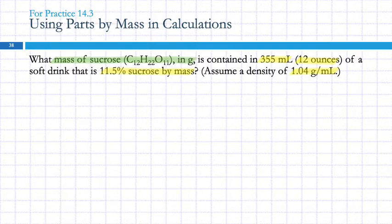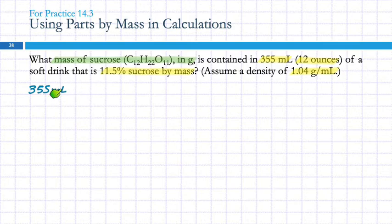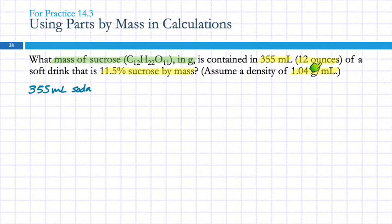Let's write these things down. We have 355 milliliters — of what? When we've got a solution, we've got the solute and the whole solution. Here we're talking about a soft drink that has sugar in it, so 355 milliliters is of the whole solution — I'm going to call it soda. And we're also given a density of 1.04 grams per milliliter. Always read the problem through, then go back and look at the numbers.